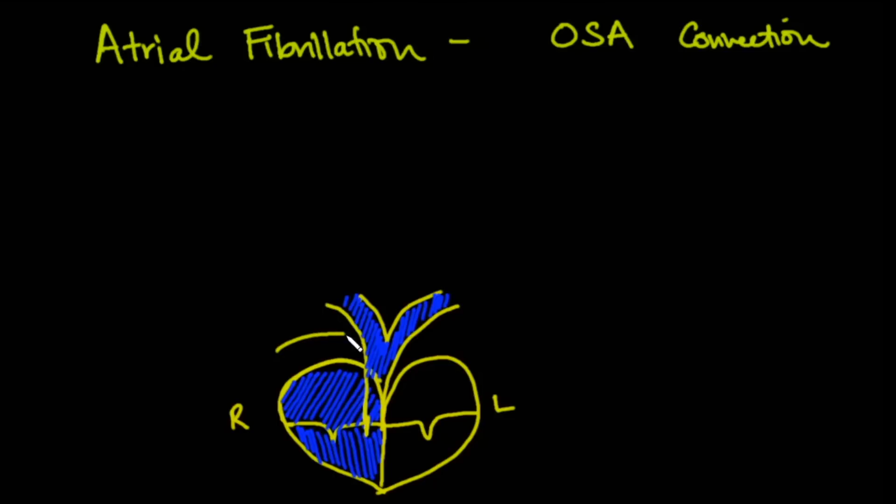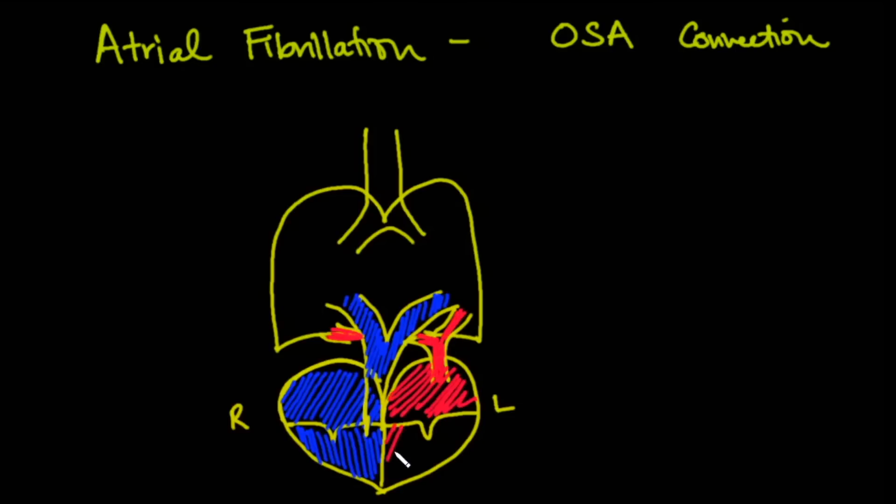This is where it reaches the lungs, which we'll draw up here. Obviously, this is not anatomically correct. It's at this point that it becomes oxygenated and comes back to the left atrium through the pulmonary veins, and we'll color those bright red. It comes back here all nicely oxygenated, then goes down into the left ventricle and gets pumped out to the body through the aorta.